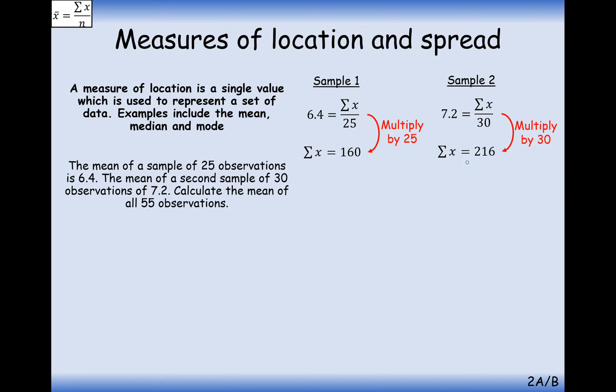So now that we know the summation of the two sets of data, we now can work out the total sum of the data is 376 by adding these two values together. And given that there were 55 bits of data in total, then we can just do a simple calculation of 376 divided by 55 equals 6.84.